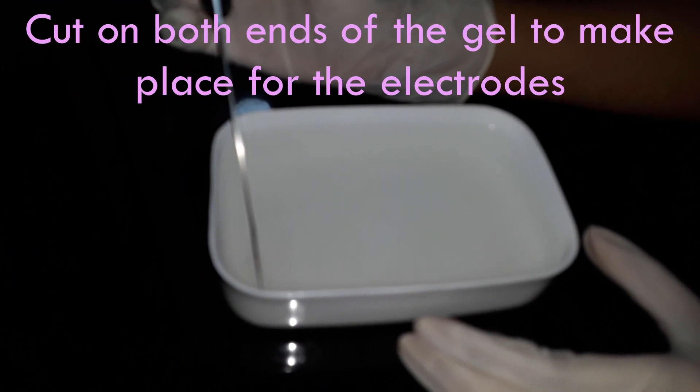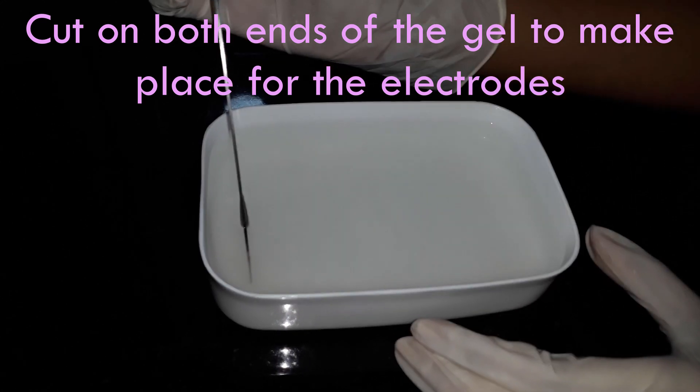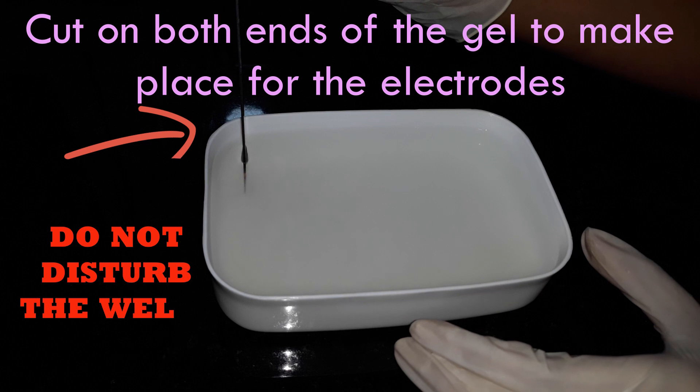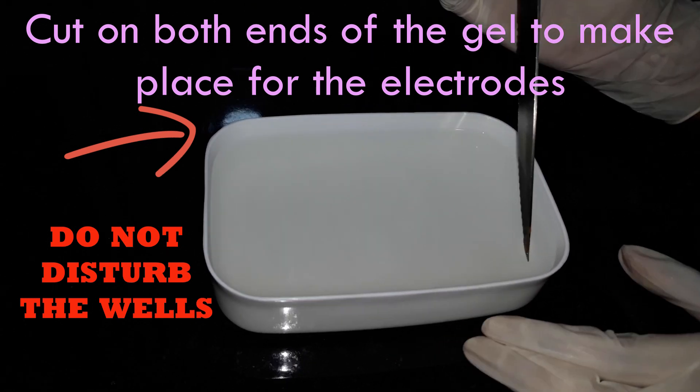Now, we have to make 2 cuts at the 2 ends of the chamber for inserting the electrodes. Make sure to not disturb the wells in this process.